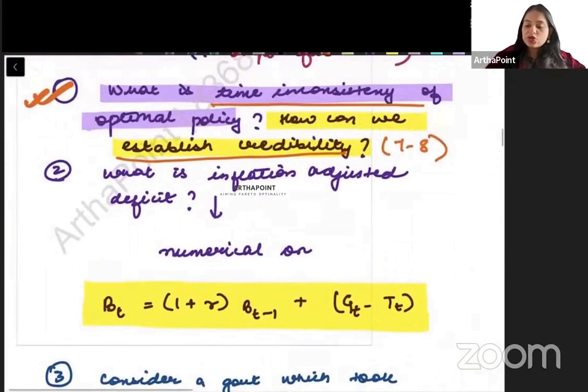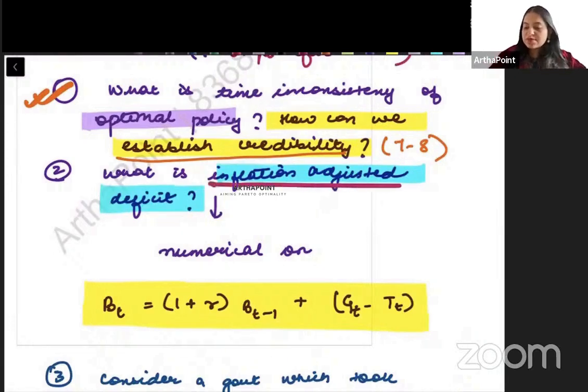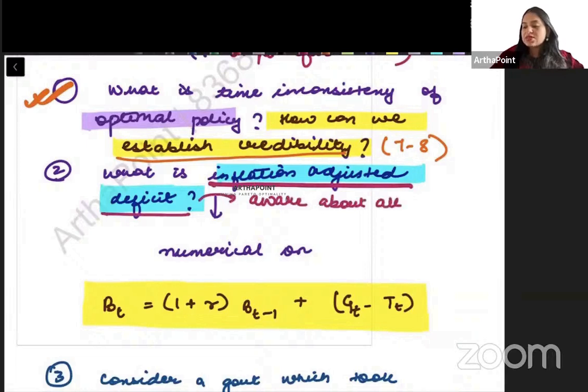Second question beta. The second important question from the point of view of exam is this. What is inflation adjusted deficit? Right? And on this beta, there are many synonyms. So you should be aware, be aware about all synonyms.